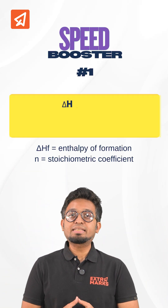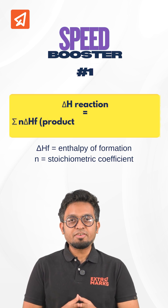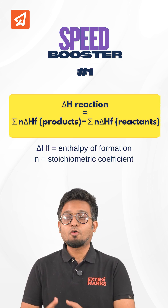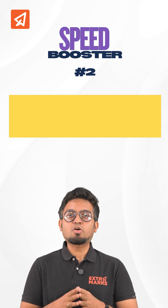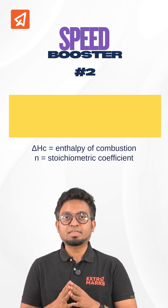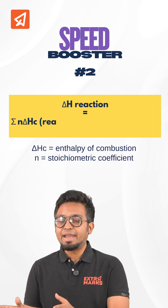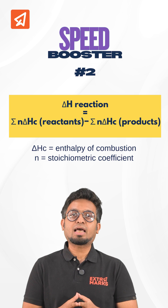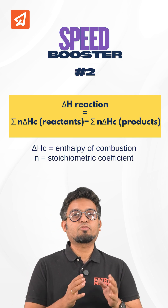The first trick says that enthalpy of any reaction is nothing but the difference of all the enthalpy of formation of the products minus that of the reactants. The second one is also very similar but it uses enthalpy of combustion — enthalpy of any reaction can be written as the sum of the enthalpy of combustion of the reactants minus that of the products.